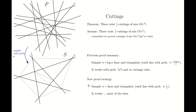The new proof strategy is similar. Instead of sampling r·log n lines, we sample r lines and then triangulate the arrangement. It turns out that most of the triangles we obtain using this new proof strategy are fine — the number of lines intersecting each triangle is bounded by n/r. But it could happen that you end up with a few bad triangles that intersect more than n/r lines; therefore they are illegal triangles. The idea is to fix them by cutting such bad triangles into smaller triangles, thus getting rid of them.